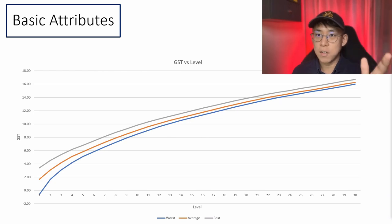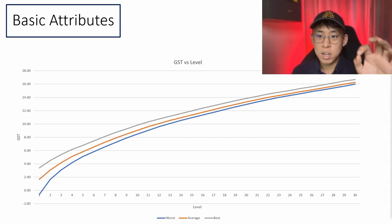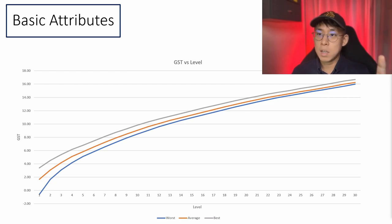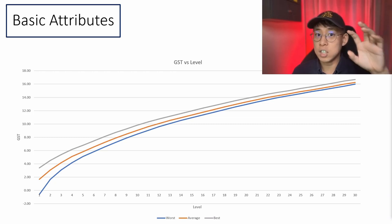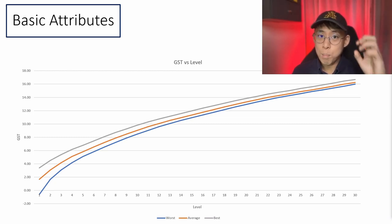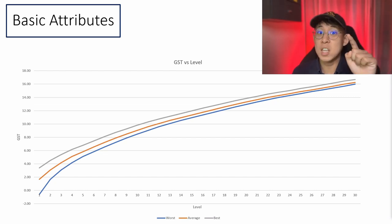On this chart, you can see GST versus sneaker level — the y-axis is GST and the x-axis is the level. The blue curve is the worst performing shoe, the orange curve is the average shoe, and the grey curve is the best shoe. The curves are quite separated at the very beginning and the distance decreases toward the right as levels increase. This shows that basic attributes have a larger impact on earnings at lower levels, and the impact decreases at higher levels. So if your earning shoe is less than level 9, getting a shoe with good basic attributes is really very important.